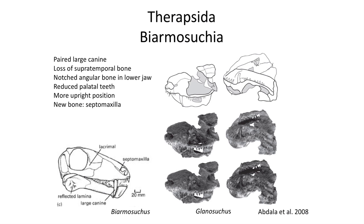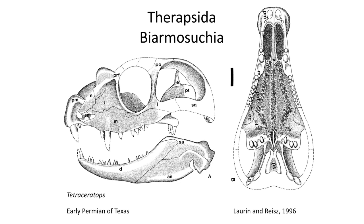The Therapsida are a more advanced group of Synapsida, with the most basal group called the Biarmosuchia, with fossils like Biarmosuchus and Gorgosuchus, which have large canines that look like scary vampire-like teeth. The Biarmosuchia also includes Tetraceratops — not to be confused with Triceratops — which features four bony knobs on the skull, long sharp teeth, and a wide temporal fenestra. The tiny septomaxilla bone is found in the nostril and is prominent.